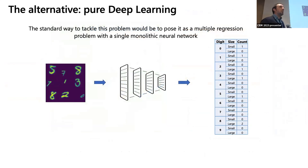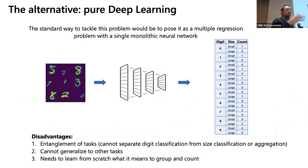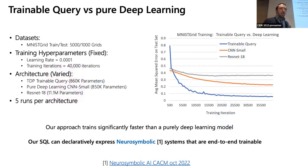If you want to do this in a pure deep learning way, you basically will build a big neural network that is able to do all of this together. And this has several disadvantages. You cannot separate the digit classification and the size classification from the computation of the aggregate and the group by. You cannot generalize over different tasks because that is exactly the CNN that you're building there. And basically the neural network has to learn from scratch how to do count and group by, which instead we know how to do. And as you might expect, the performance are quite better compared to just a neural network approach. And here we compare against a CNN that has a similar number of parameters as our trainable query. We compared with a bigger CNN model that has around 11 million parameters. As you can see, we can train much faster. We injected some additional information thanks to the query, basically how to do group by and count. And the neural network only needs to care about learning how to do digits and size extraction from images.